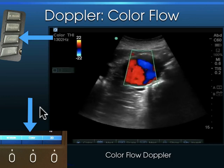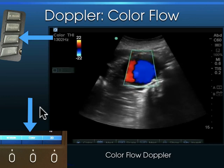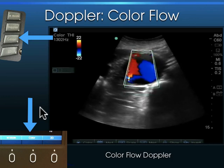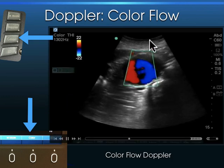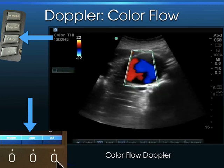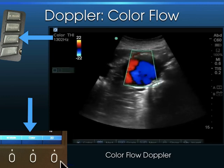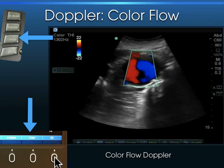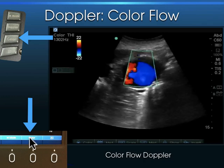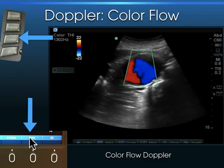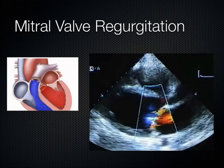Yes — the top of the screen is the transducer. Correct. This is the skin line, the footprint of the transducer right there. The way we activate this flow: we come down here, hit mode — there's 2D, which is just brightness mode, and there's color. You activate color, and then this color box — this sampling gate — pops up on the screen, and you place that over the valve.